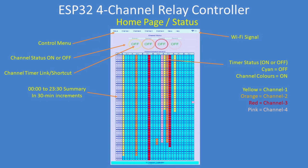The schedule summary shows 24-hour, half-hour periods for each day of the week, and within each day there are four channels denoted by yellow, orange, red, or pink. Note the links on the timer channel icons at the top — if you click on 'off' it'll take you to the channel one timer, or you can go directly from the channel one menu item and so on.